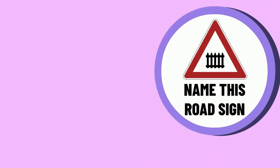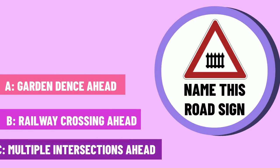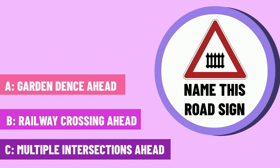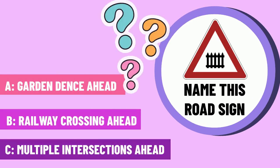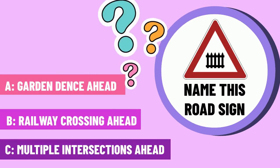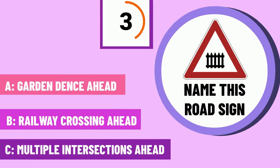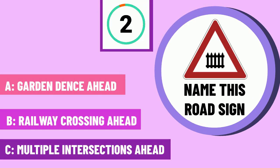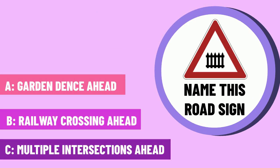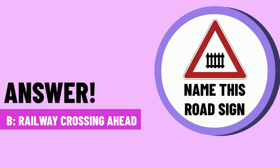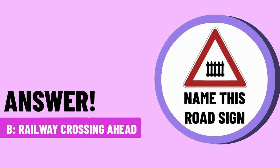Question 7. Name this road sign. The correct answer is B — railway crossing ahead.